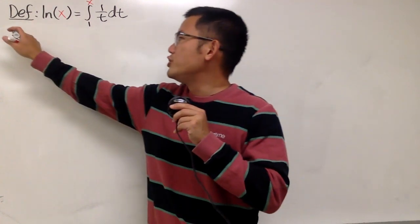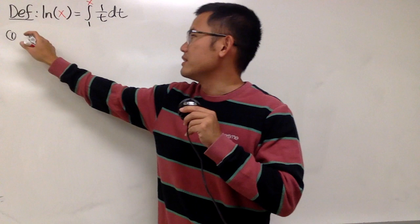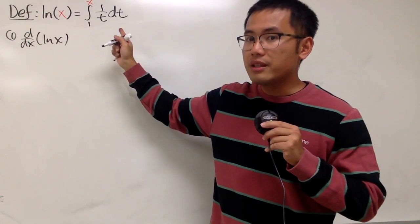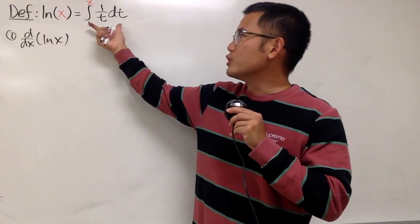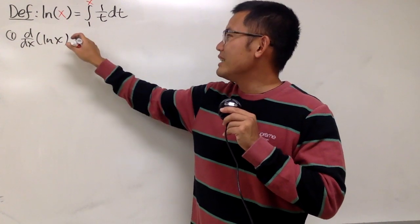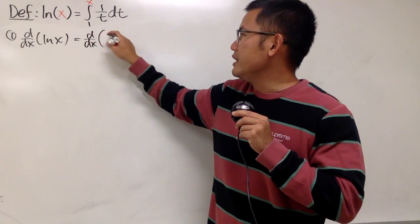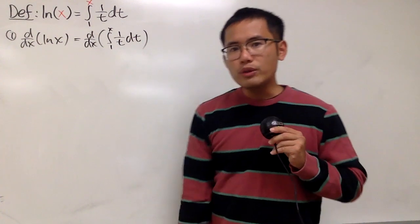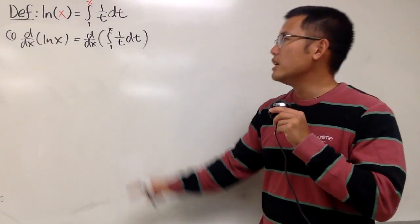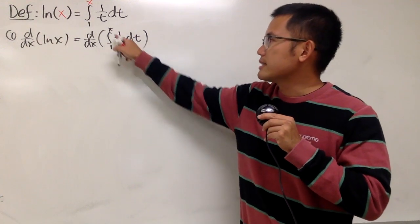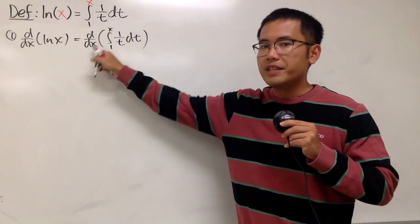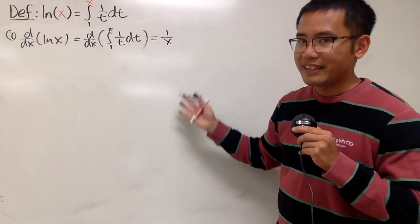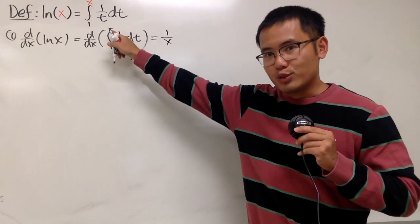First, let me show you what the derivative of natural log of x is. Keep in mind, we are using this integral definition. To differentiate natural log of x, we differentiate the integral from 1 to x of 1 over t, dt. This is nice because we can use the first fundamental theorem of calculus — the derivative and integral cancel out. So we just have 1 over x, and the derivative of x is just 1.